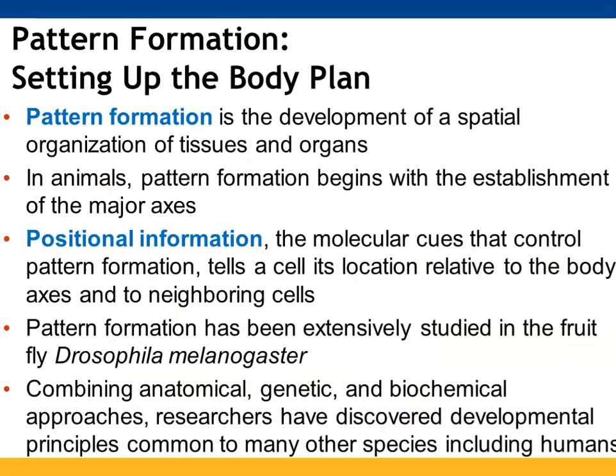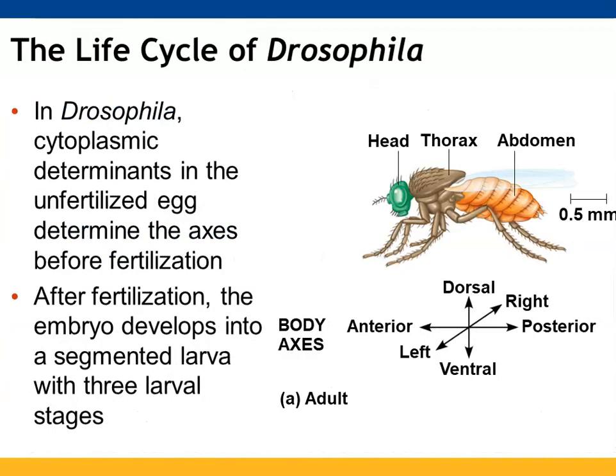Pattern formation is getting things set up spatially — you want to set up your axes initially so that is ready to go. Positional information provides cues that tell the cell where it should be relative to those axes and its neighboring cells. This has been explored a lot in the fruit fly. By taking anatomical, genetic, and biochemical approaches we were able to see through the fruit fly that there were developmental principles similar in other species, including us. The cytoplasmic determinants present in the unfertilized egg determine where the axes are going to be and where the different segments will be in the adult fruit fly — head, thorax, and abdomen lined up along those body axes.